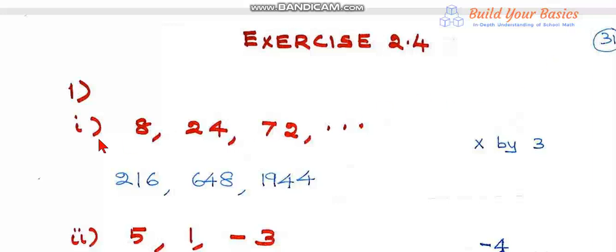First subdivision: the numbers are 8, 24, 72, and so on.